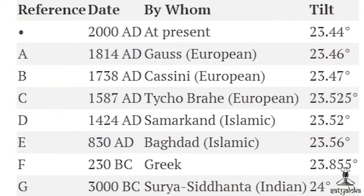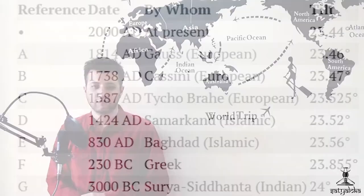Compared to other values, the Surya Siddhanta obliquity appears very imprecise. While the others have two or three decimal places, the Indian value is a whole integer. What are the chances that the tilt was exactly 24 degrees when the ancient Indian astronomer measured it? Very, very unlikely.